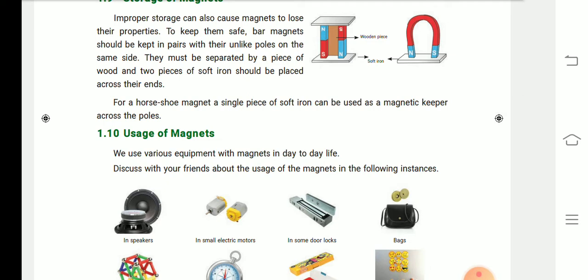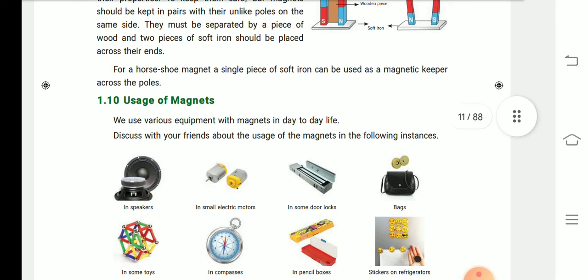This is the way to store the magnets. This is the bar magnet. The bar magnets are stored in wooden pieces. For a horseshoe magnet, a single piece of soft iron can be used as a magnet keeper across the poles.